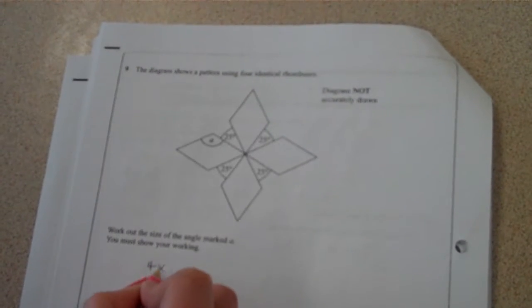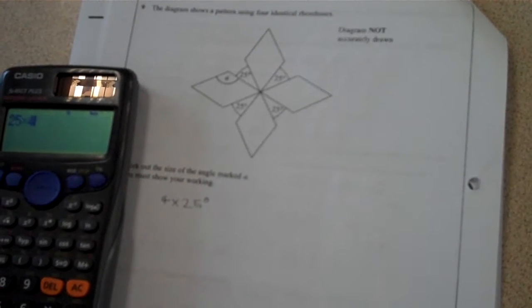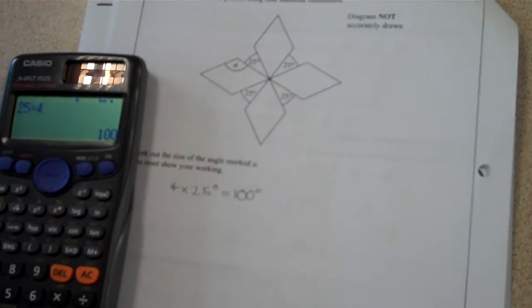So I've got four lots of my 25 degrees, and again don't feel you have to do it in your head, do it on your calculator. So 25 times by 4 means that I've got a hundred degrees from the ones that I'm given in the question.